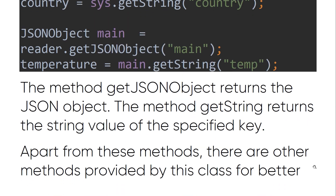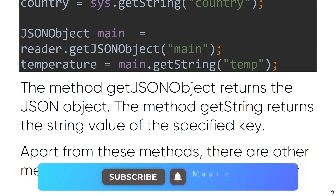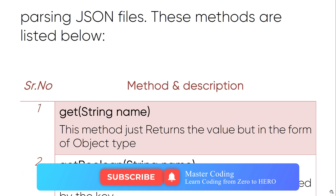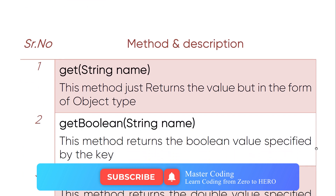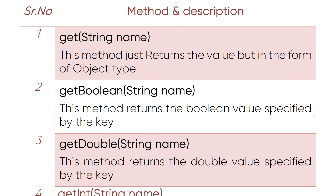In a real example we are going to clarify these methods and functions. The method getJSONObject returns the JSON object. The method getString returns the string value of a specific key. Apart from these methods, there are other methods provided in the class for better parsing of a JSON file. The first method is get(String name), which returns a value in the form of object type.